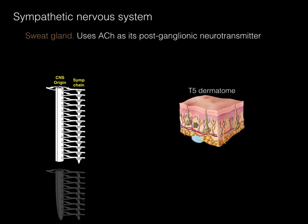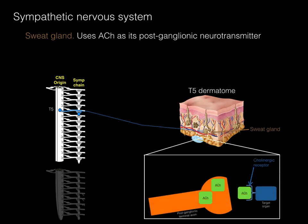The second exception is sweat glands: they use acetylcholine as the postganglionic neurotransmitter, not norepinephrine. This occurs at any level from T1 to L2. For example, a sweat gland at the T5 dermatome level receives a preganglionic sympathetic neuron that enters through the white ramus, synapses in the sympathetic chain, and a postganglionic neuron exits through the gray ramus to synapse at the sweat gland using acetylcholine. Sweat glands are innervated by sympathetics but use acetylcholine as the postganglionic neurotransmitter.